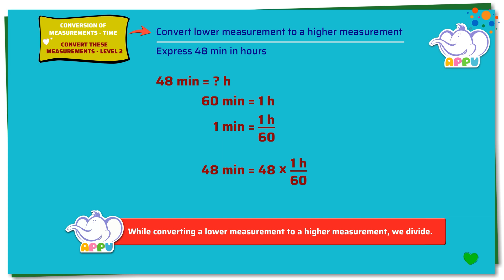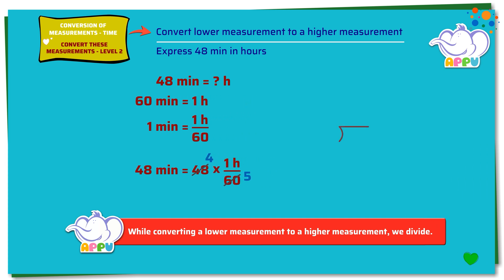Let's simplify. 12 divides 48 four times and 12 divides 60 five times. We further simplify by dividing 4 by 5. We write the division bracket, 5 outside and 4 inside. We cannot divide 4 by 5, so we write 0 and a decimal point to the quotient and add 0 to get 40. 5 divides 40 eight times with 0 remainder. The quotient is 0.8. So 48 minutes equals 0.8 hours.